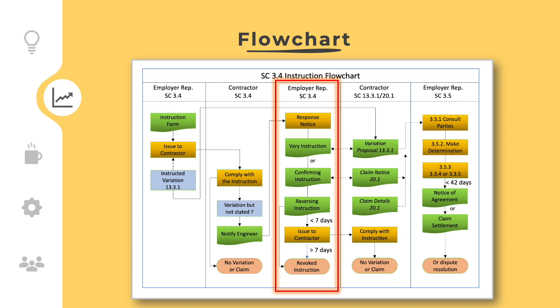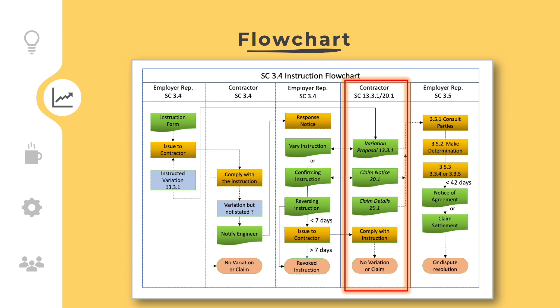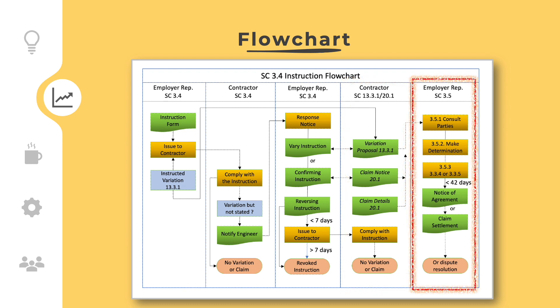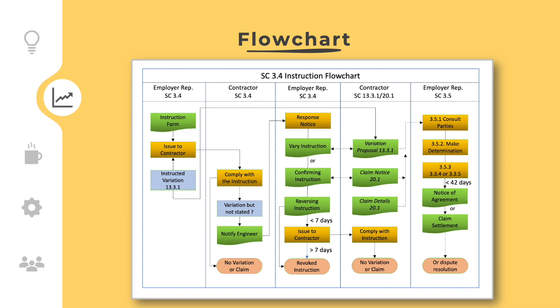Depending on the answer, the instruction can be confirmed, reversed, or changed. Unless the employer's representative reverses or revokes the instruction, the contractor must comply with the instruction. Depending on whether the instruction is a variation or not, the contractor must submit a variation proposal or decide to submit a claim notice. If the instruction results in a variation or a claim, then the respective variation and claim clauses shall be followed.